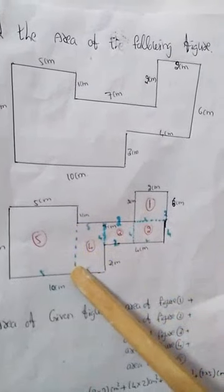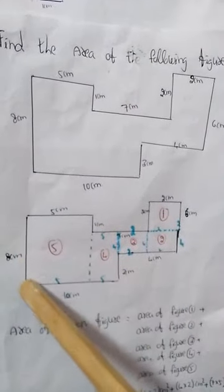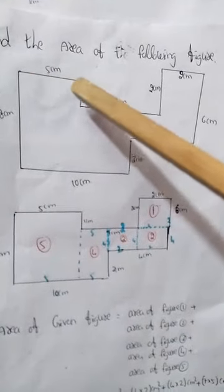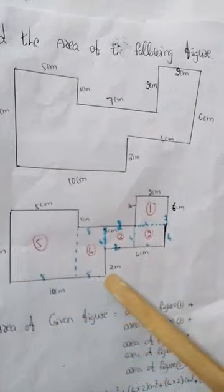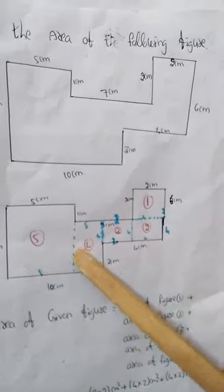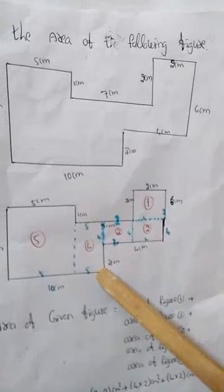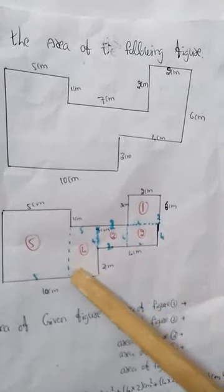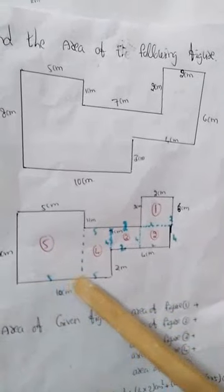Coming to Figure 5: one side is eight centimeters and the other side given on the top is five centimeters. The base is ten centimeters total; up to here five, then the remaining will be five. So the measures of Figure 4 are seven centimeters and five centimeters, and the measures of Figure 5 are five centimeters and eight centimeters.